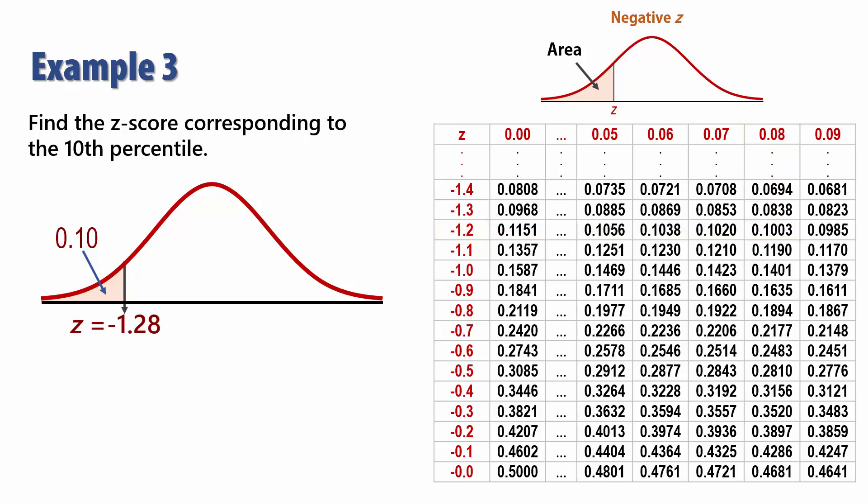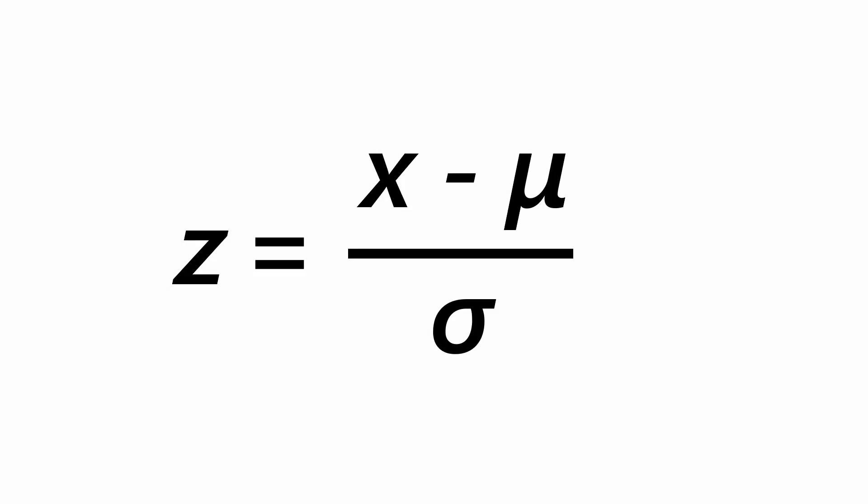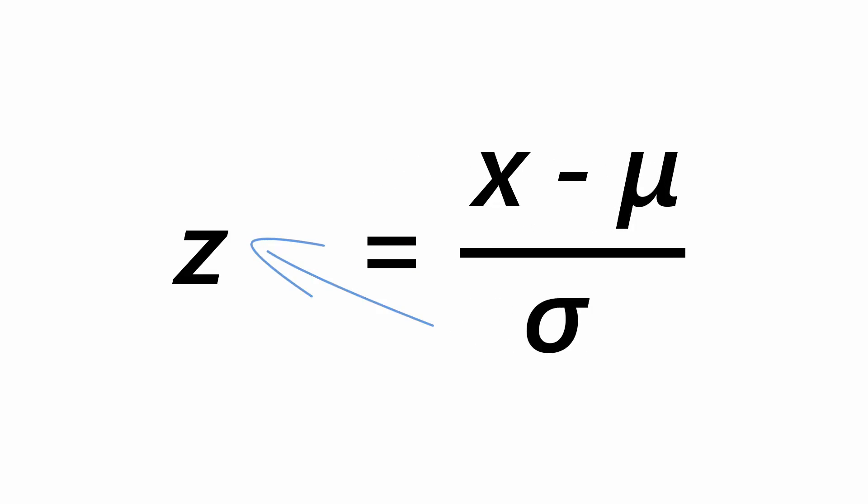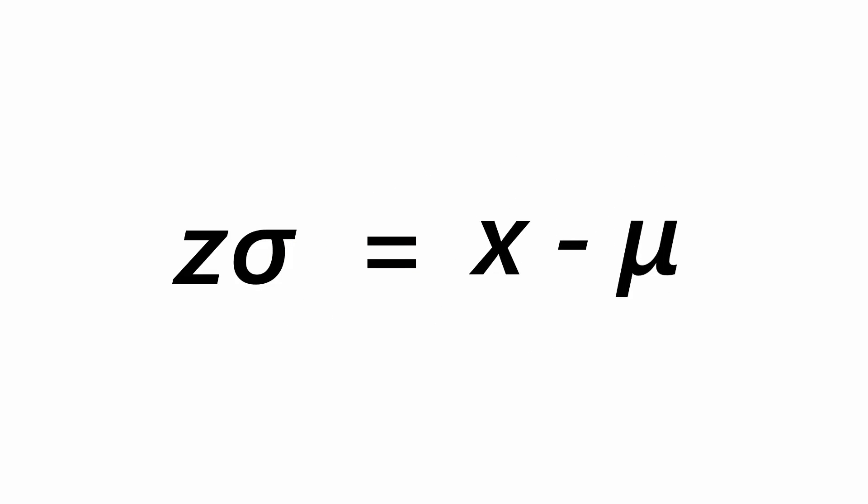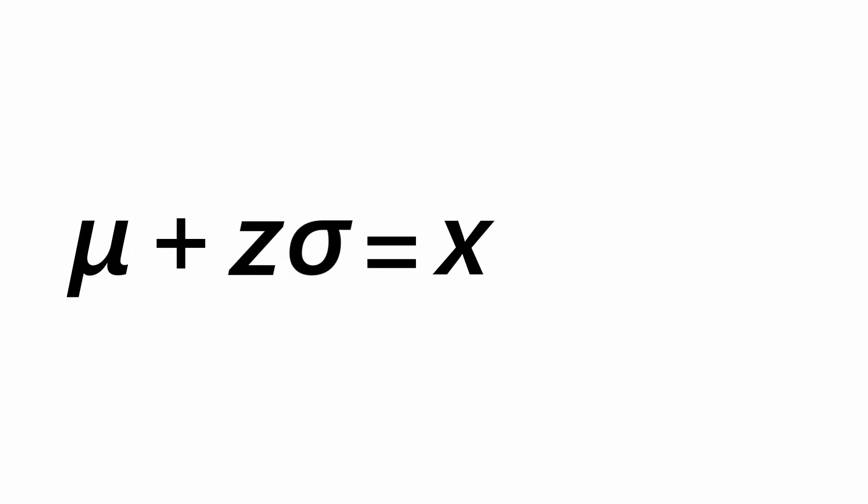Now recall the standard normal score transformation formula. To recover X, we can simply make X the subject of the formula by cross multiplying and bringing sigma up, and then moving the mean to the left. And finally, exchanging both sides.